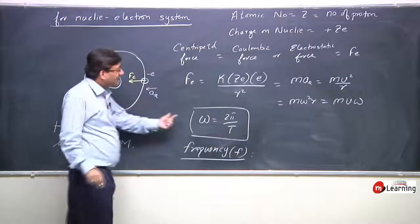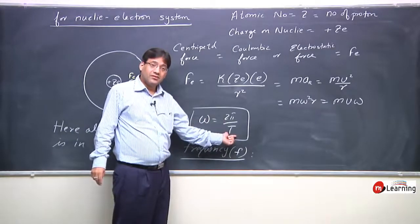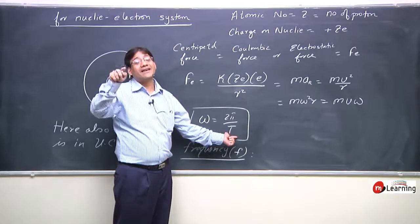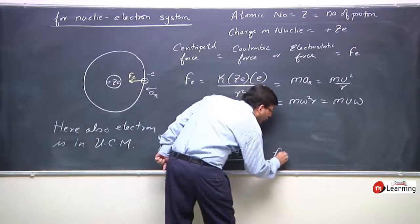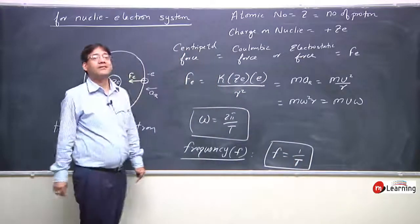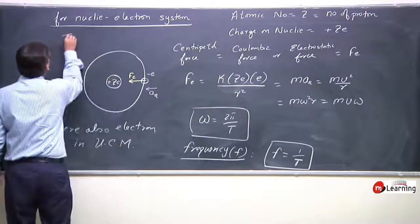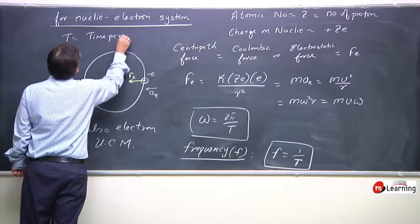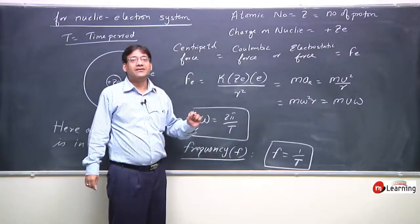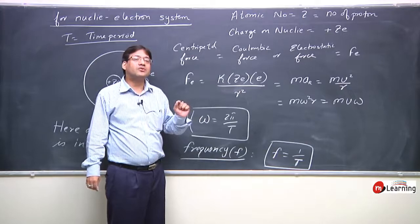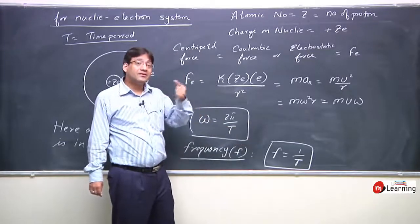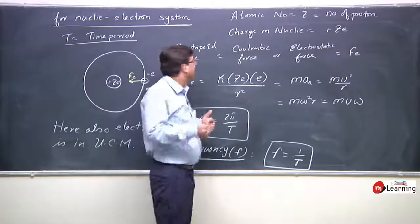If T is the time period of circular motion, one circle is finished in time T, so the number of circles finished in one second would be equal to 1 upon T. Frequency is always the reciprocal of time period: f = 1/T.